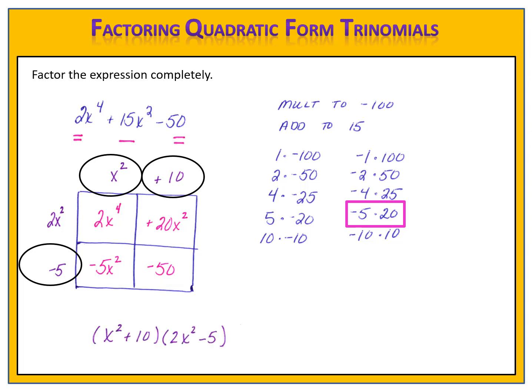I now have my binomials: x squared plus 10 and 2x squared minus 5. I always check to see if I can factor further. Are there any greatest common factors in either of the binomials? No, there are not. Is there a difference of two perfect squares? Not this time. My factored form is x squared plus 10 times 2x squared minus 5.